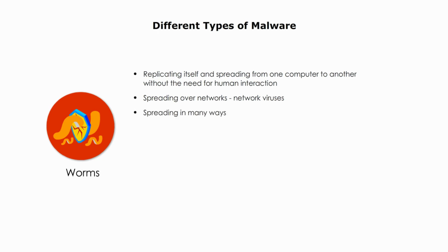Worms can spread in many ways. Worms can be attached to email messages — when a recipient opens the email, the worm is installed on their computer. Worms can be downloaded from malicious websites or file-sharing networks. Worms can spread through network shares. Worms can also be stored on USB drives — when a user plugs an infected USB drive into their computer, the worm is installed on their computer.